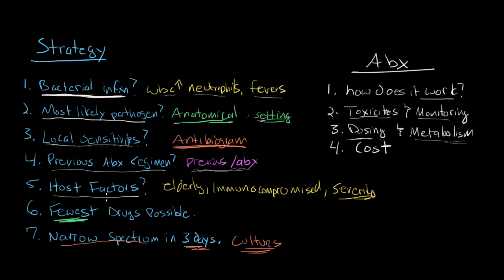Step five is knowing your host factors specific to that patient. If you have an elderly patient, an immunocompromised patient, or a patient who is very severely ill, this can change your choice of antibiotics. Immunocompromised patients may have more opportunistic infections, so you may need to cover a slightly different range of pathogens. If a patient is severely ill, you may want broader coverage to cover a greater spectrum of pathogens.